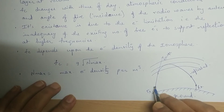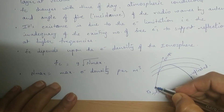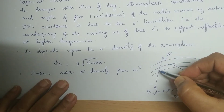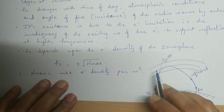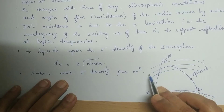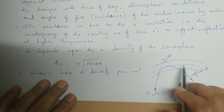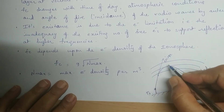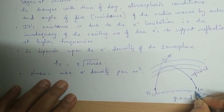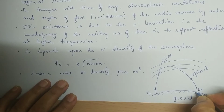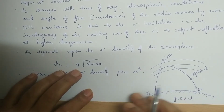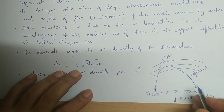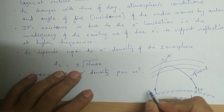If the transmitter radiates a signal and the frequency of that transmitted signal is greater than the critical frequency of a particular layer, then the signal will penetrate that layer and nothing will reach the receiver — meaning communication fails.